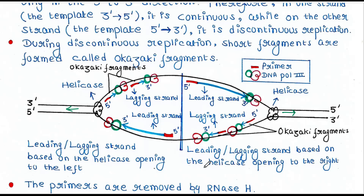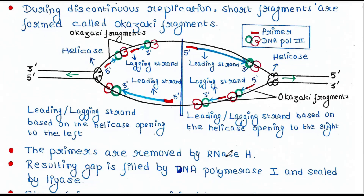After this, the primers should be removed — the red ones are RNA primers, so they must be removed. Primers are removed by RNase H. Once the primers are removed, there will be an obvious gap, which will be filled by DNA polymerase I. DNA polymerase I will synthesize DNA in these gaps in place of the RNA primer.